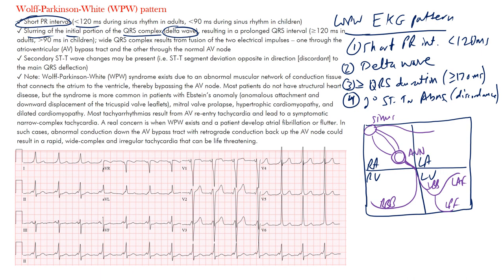This is the normal pathway where conduction goes from the sinus node, from the atria to the ventricles. However, in some cases you have what's called an accessory pathway. This is called an AV bypass tract — atrio-ventricular bypass tract — connecting the atria to the ventricles. In WPW syndrome, this accessory pathway is often referred to as the Kent bundle, or bundle of Kent.